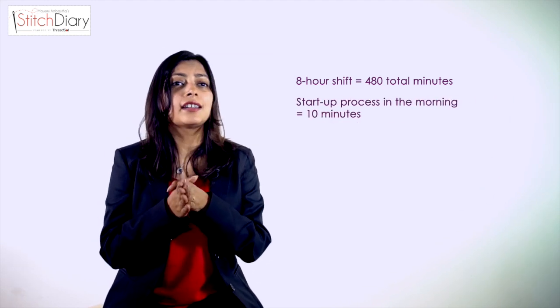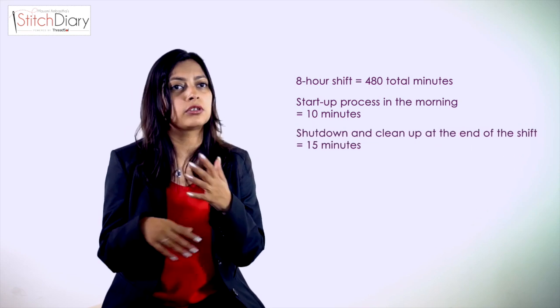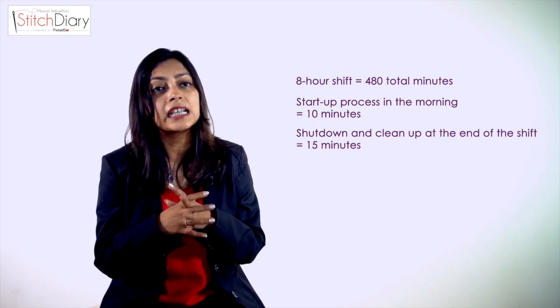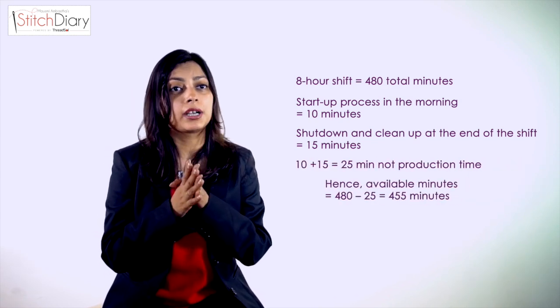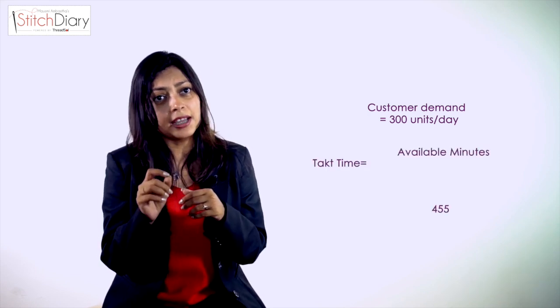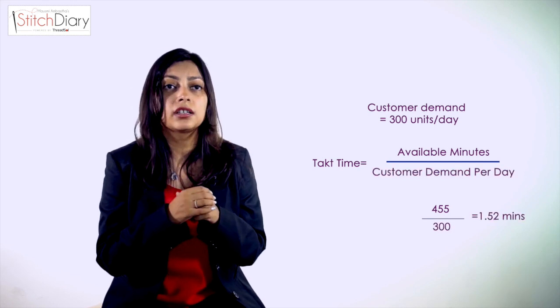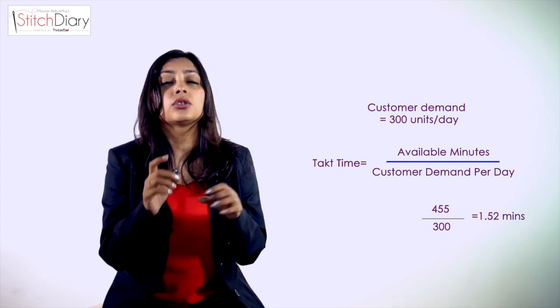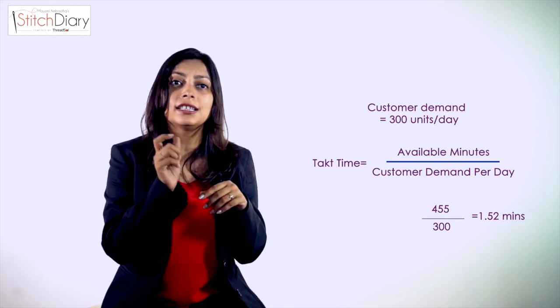Let's understand this with a simple example. For one operator, there are 480 minutes available in one shift. 10 minutes is spent on startup and 15 minutes on shutdown and cleaning, totalling 25 minutes unavailable. Therefore 480 minus 25 equals 455 minutes of actual available time. With 300 pieces expected to be produced, the Tag Time is 455 divided by 300, which equals 1.52 minutes per piece. The entire production line must be balanced to this time to ensure smooth, clockwork production.